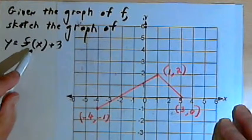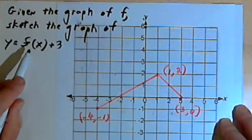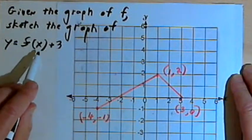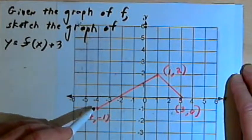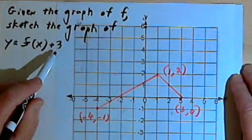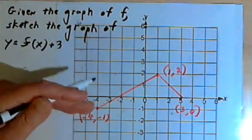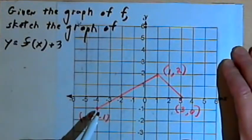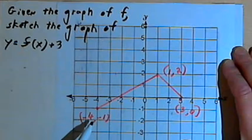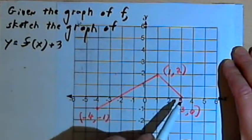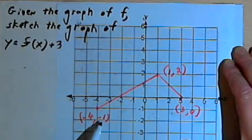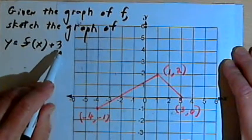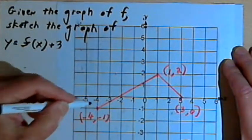If we think of f as being the y-values for the original function, then what this is saying is that for the new function, for f plus 3, we're going to take the old y-values and add 3 to them, and they will be the new y-values. That's going to have the effect of taking the graph and shifting it upwards three units. We can do this methodically by taking each of these three labeled points, looking at the y-coordinates, and adding 3 to them — taking a y-value and adding 3 more will give us a point on the new graph.